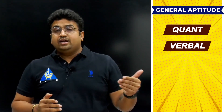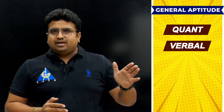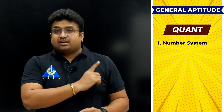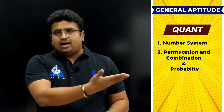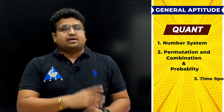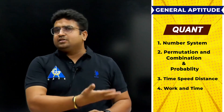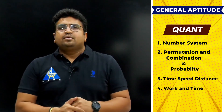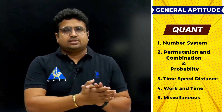In Quant and DILR, I have divided the content into five different topics. The first one is number system. The second is permutation, combination, and probability. The third is time, speed, distance, and work and time. And furthermore, there is miscellaneous. So more or less, these are the topics.